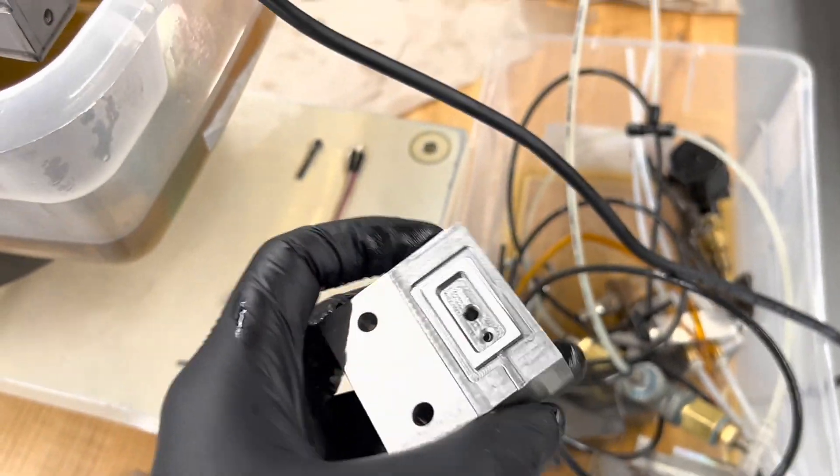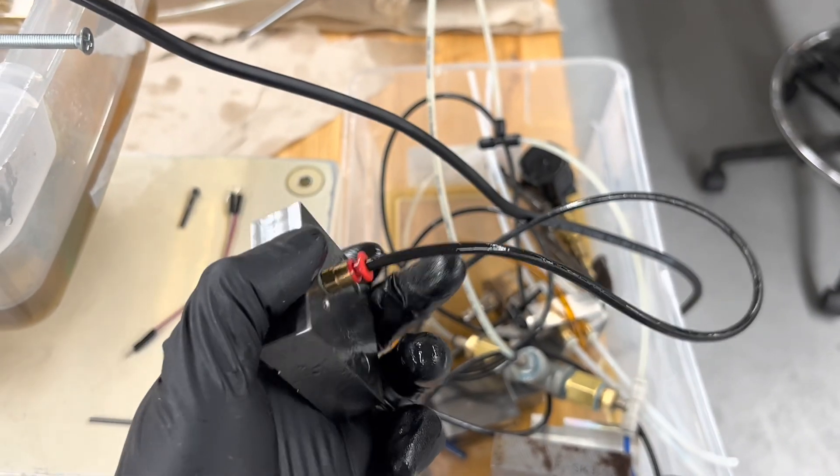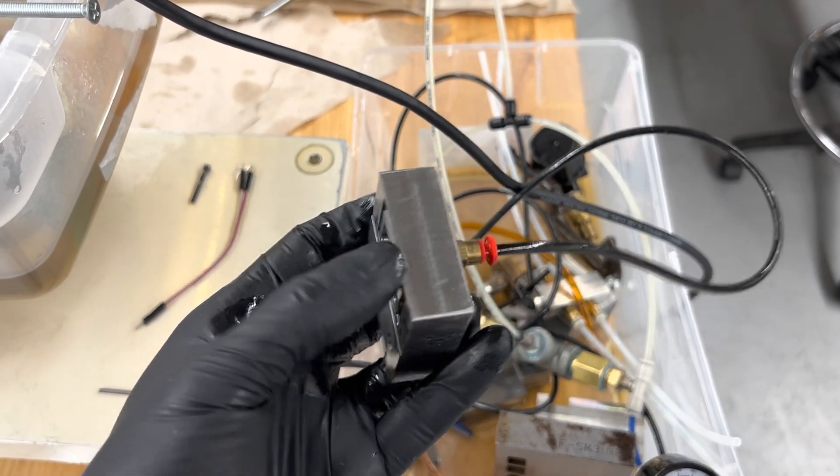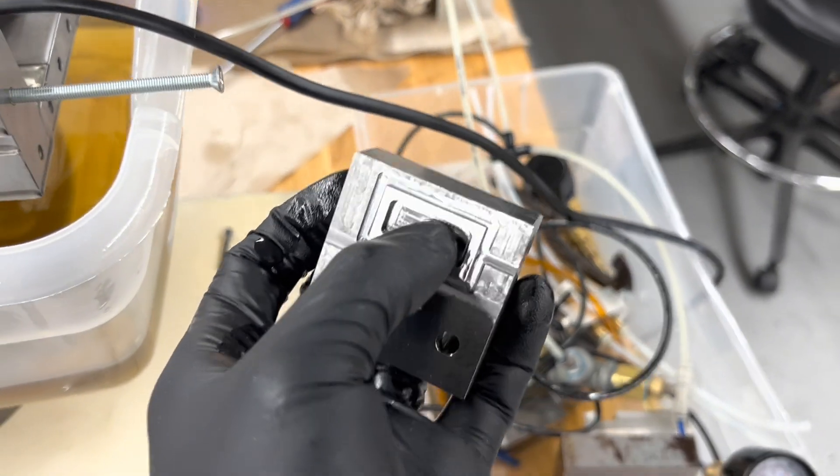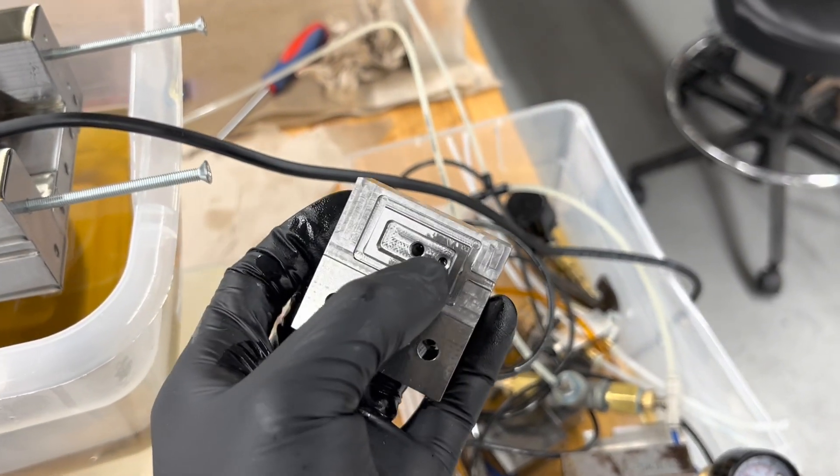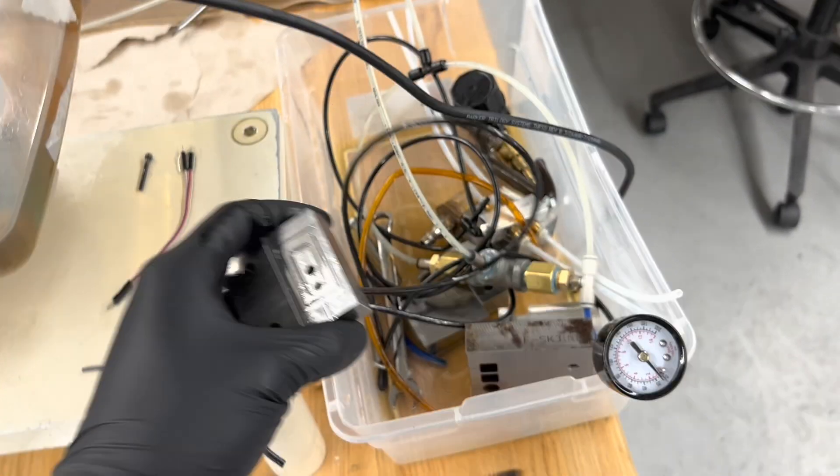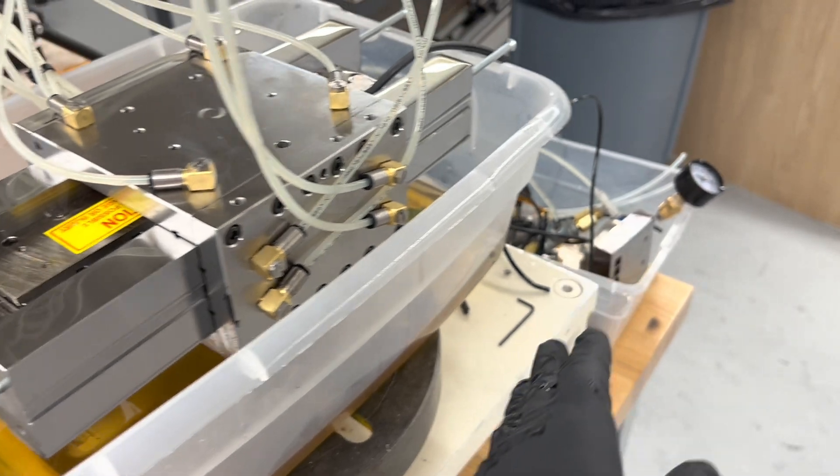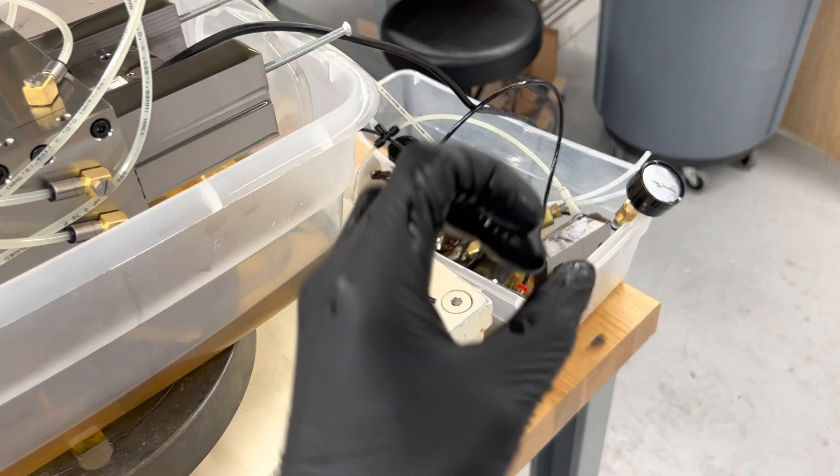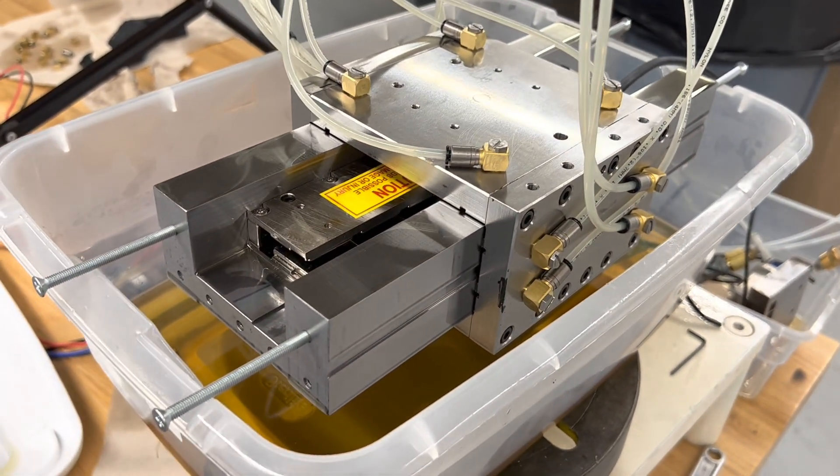The only difference between this one and the ones in the final are the set screws. The orifices actually are installed from the top so we can access them without having to take the whole carriage apart. And then that port there is just a pressure monitoring port for this prototype. So there's a lot of math and I made a little MATLAB code to figure out how big everything needs to be but we won't go into that today.